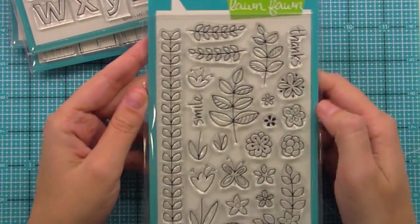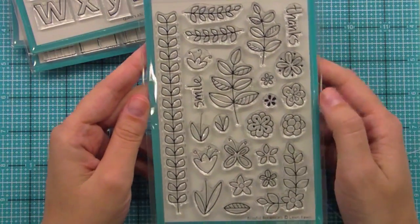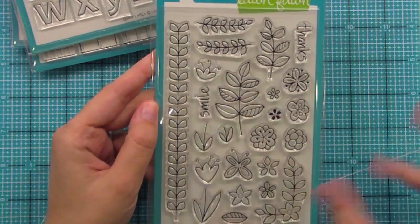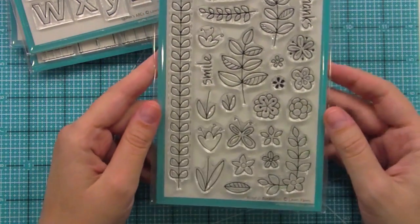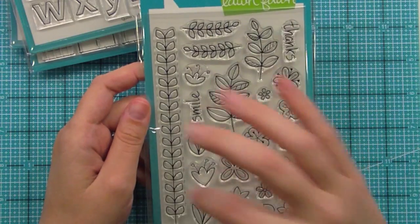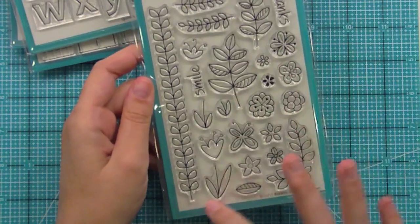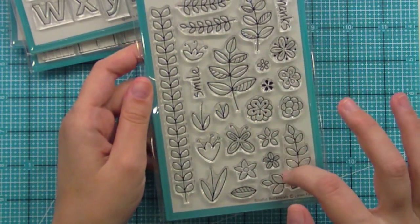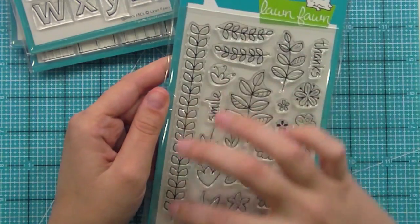This is Blissful Botanicals and this is another set kind of in the line of our flowers. So we have Petite Florals and Judy's Blooms and now Blissful Botanicals. The really great thing about it has a lot of leaves, has a lot of different stems that you can add the flowers to. This I think is my favorite right here. So cool on a card.